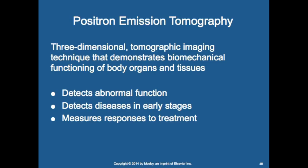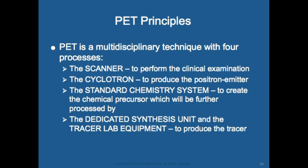PET is a three-dimensional tomographic imaging technique that demonstrates biochemical functions of body organs and tissues. It detects abnormal function, detects disease in early stages, and measures response to treatment for cancer. PET is primarily used for cancer but also for Parkinson's disease, degenerative joint disease, and other conditions. PET is a multidisciplinary technique requiring a scanner, a cyclotron to produce the positron emitter, a chemistry system to create the chemical precursor, and tracer lab equipment.